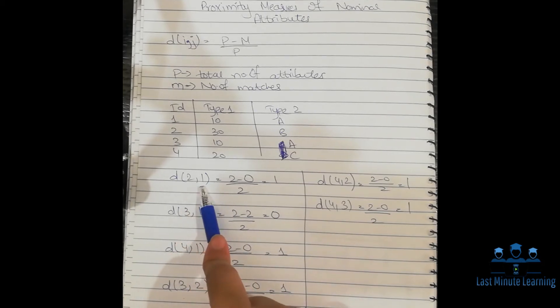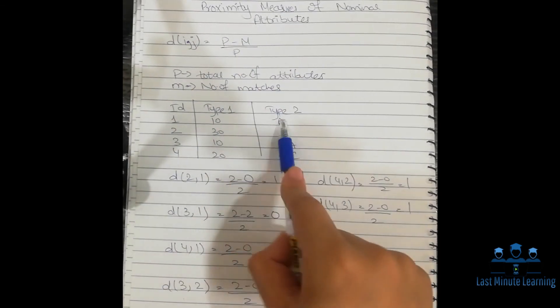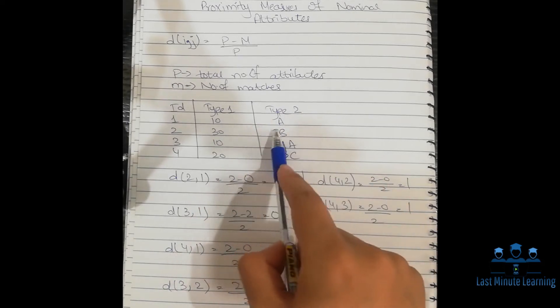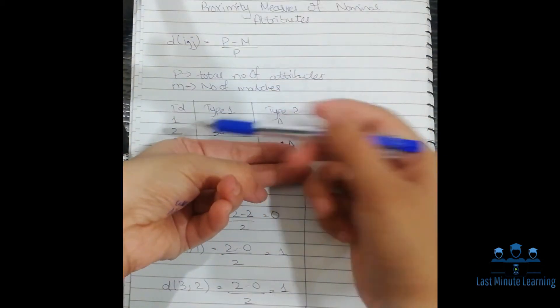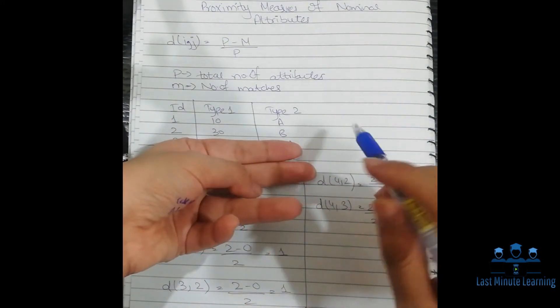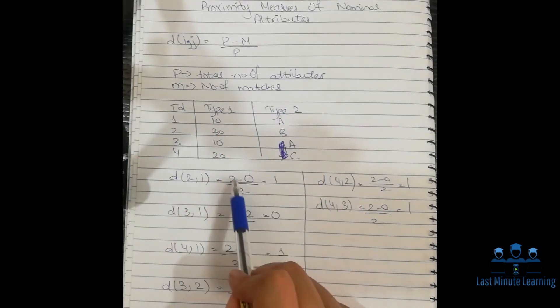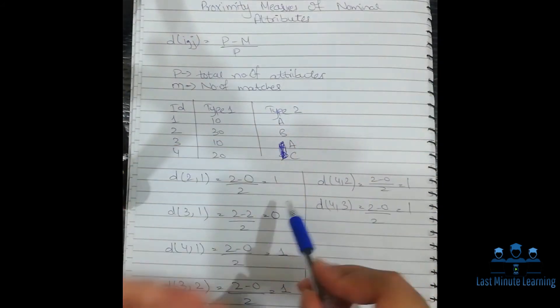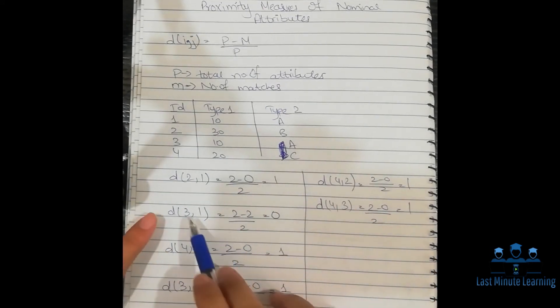This means we have to measure the difference between 2 and 1. We can see the formula: the total number of attributes are 2, as there are two types. We will write 2, then minus, then we will see how many similarities are there. We can see that a and b are not the same, 10 and 30 are not the same, which means there is no similarity, so we will minus 0 from it. P minus m: 2 minus 0, divided by 2. The answer is 1. In the same way, we will find the second one.